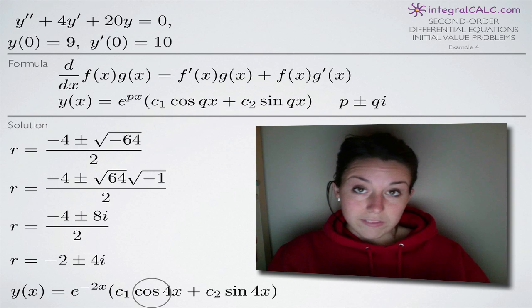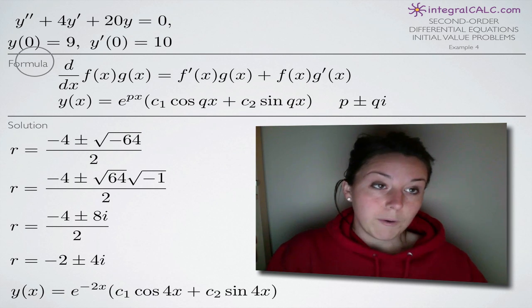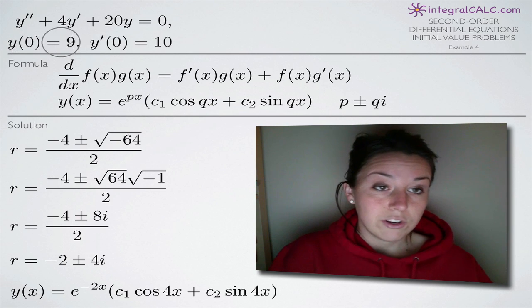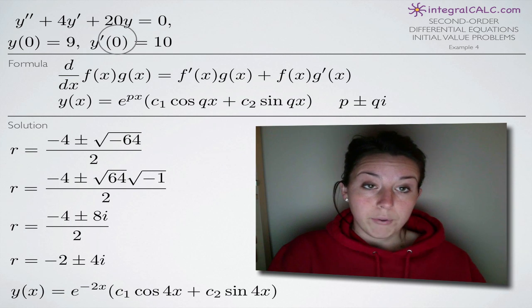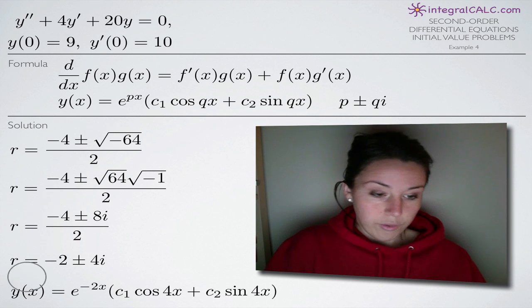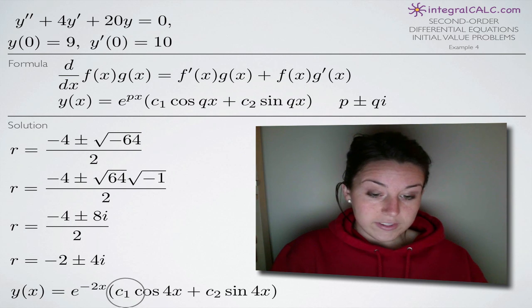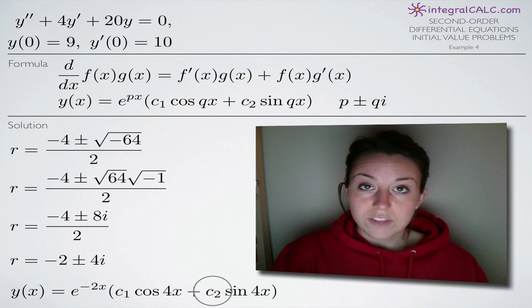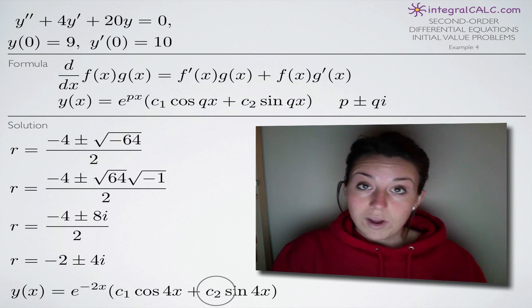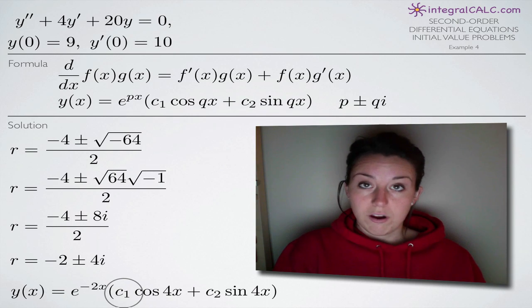The rest of the way we're going to do a couple of things. First, we're going to take the derivative of y to get y'(x). Once we do that, we'll plug in our two initial conditions: y(0) = 9 will be plugged into our original y(x) equation, and y'(0) = 10 will be plugged into y'(x). We'll get two equations back that both involve c₁ and c₂. With those two equations, we'll use substitution or simultaneous equations to solve for c₁ and c₂, and plug them back into y(x) for our final answer.